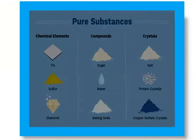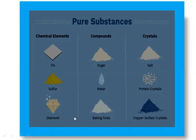A few examples of pure substances are tin, sugar, salt, sulfur, water, protein crystals, diamond, baking soda, and copper sulfate crystals.